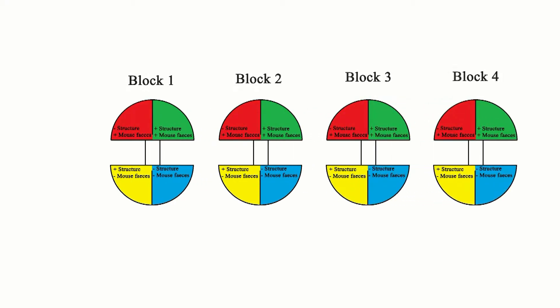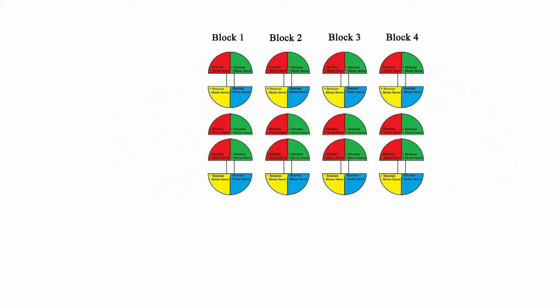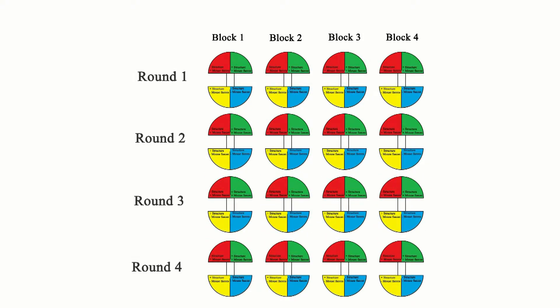Per experimental round, the four boxes were used as a blocking factor in the analysis as the boxes might slightly differ from each other. In total there were four experimental rounds. This resulted in 16 replicates, that is 4 blocks times 4 experimental rounds.